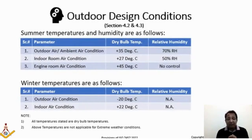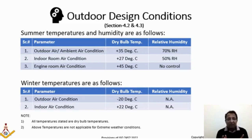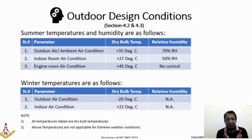This slide talks about outdoor design conditions. Sections 4.2 and 4.3 of this standard define summer temperatures and humidity and winter temperatures for ships. Since a ship moves from one location to another, we cannot take a particular fixed temperature. But if the ship is constantly moving in the North Sea or Middle East only, we take those respective regional temperatures and design based on that.